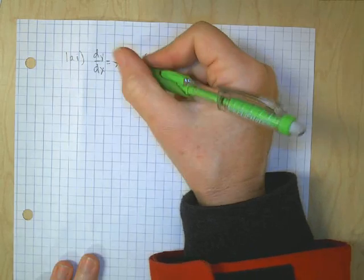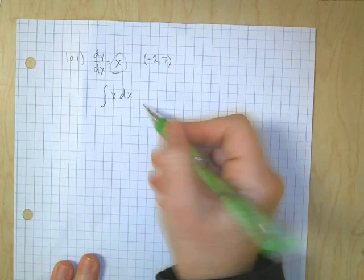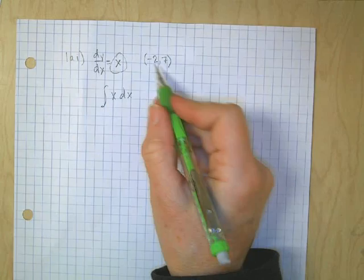So what we need to do is we need to integrate, we're going to integrate x dx, right, this guy, x dx, and then we're going to use this point to solve for c.